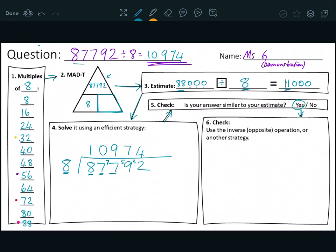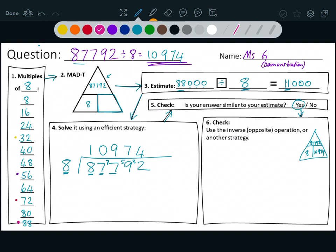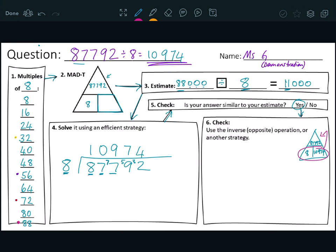Now I'm going to go to my check. So I'm going to either use the opposite operation or another strategy. I'm going to use a multiplication to check. So if it was 87,792 divided by eight is, I think, 10,974, if that's what I think it is, I've decided that I'm going to multiply these two numbers to see if I get my total. So I'm going to do, I might do the vertical algorithm today, 10,974. And I'm going to multiply that by eight.